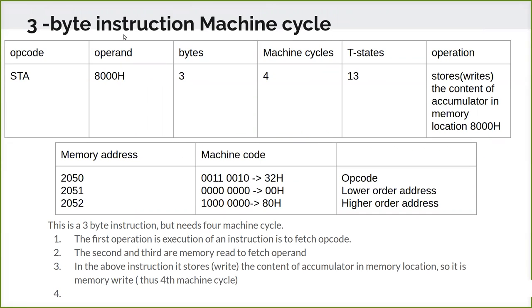Now we will see about a 3-byte instruction machine cycle. Let us take the example STA 8000H. This is a 16-bit memory location address. The opcode is 8 bits, and the address is 16 bits, so together it is 24 bits and needs 3 bytes. It needs 4 machine cycles and 13 T-states. We will see why it needs 13 T-states. The meaning of STA 8000H is: store the value of the accumulator in the memory location 8000H.